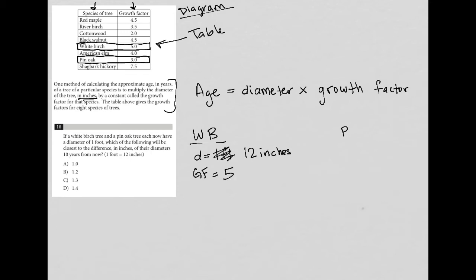And then for pin oak, which I would say PO, the diameter is 12 inches. And the growth factor for the pin oak is equal to three.